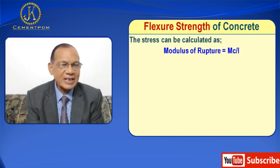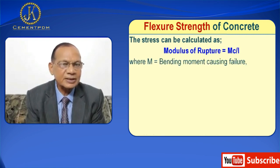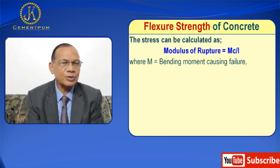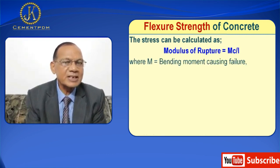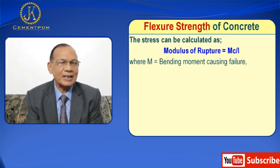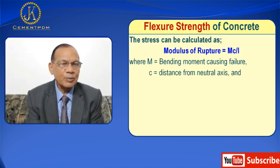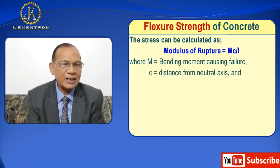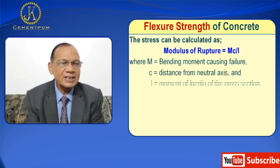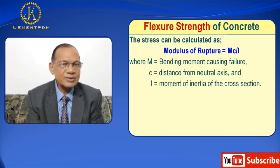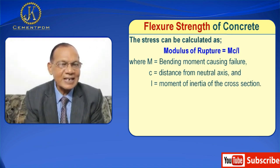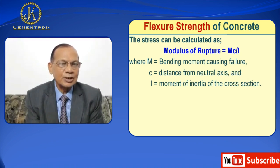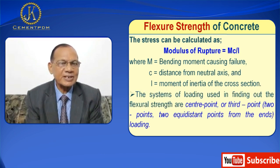The stress can be calculated as: modulus of rupture = MC divided by I, where M is the bending moment causing failure, C is the distance from the neutral axis, and I is the moment of inertia of the cross section.